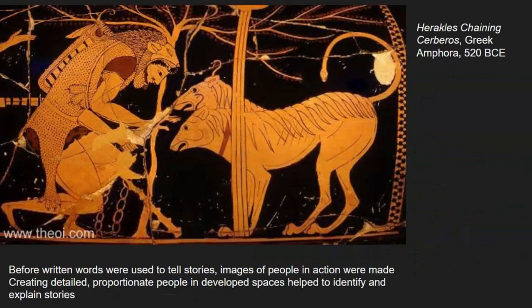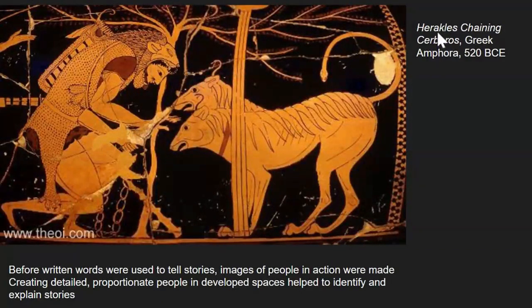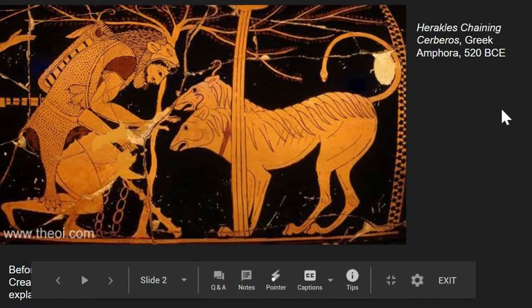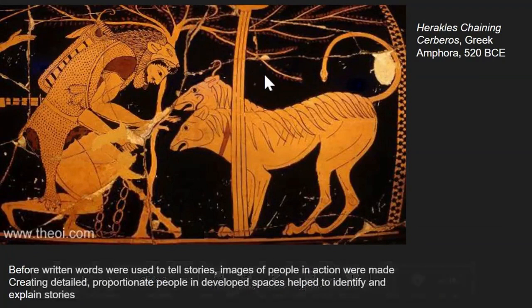This was painted on an amphora, which is a big clay vessel. This picture shows the story of Heracles chaining up Cerberus — you may know Heracles better as Hercules, the Roman version of the same stories. At this time everybody in the society would have heard the story of Heracles but would not have read it, because they didn't use written words to tell stories. So artists would also include pictures, and even at this time they were using some things that we're going to practice as well.